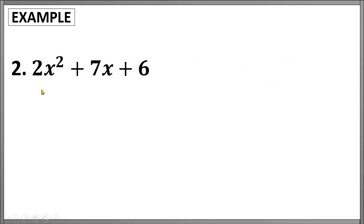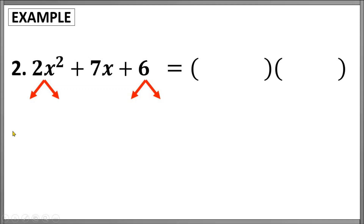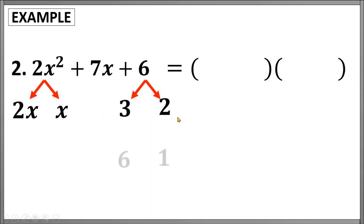Another example: 2x squared plus 7x plus 6. Setting up 2 binomial factors, we list all the pair of factors of the first and the last terms. For the first term, we have 2x and x only. For the last term, we have 3 and 2 as well as 6 and 1. Since the last term is positive 6, we can also consider negative 3 and negative 2, as well as negative 6 and negative 1. Let's check 2x and x for the first terms, and positive 3 and positive 2 for our second terms.